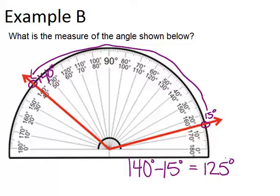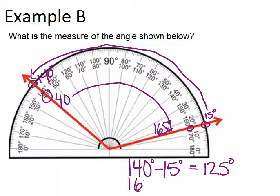You could also go in the other direction, starting with the lower set of numbers. Starting with 40 and going to 165 degrees using the lower set. If you subtract those numbers, 165 minus 40, you'll also get 125.